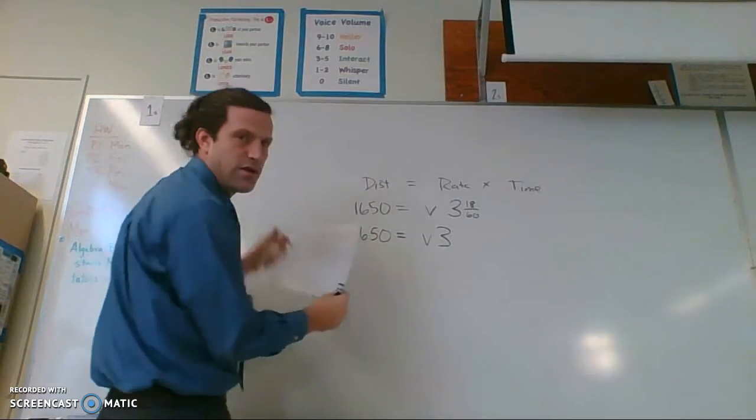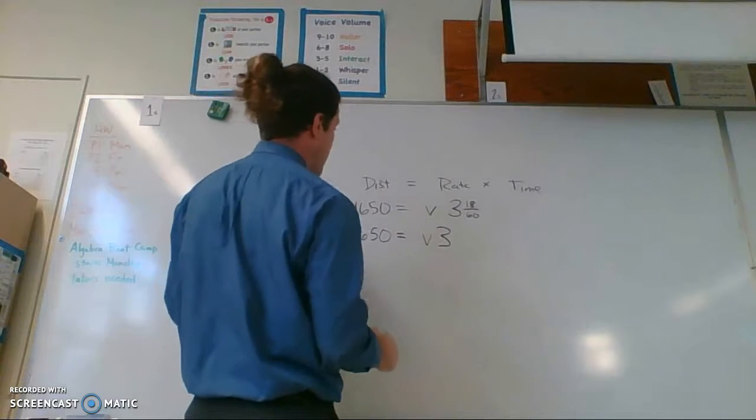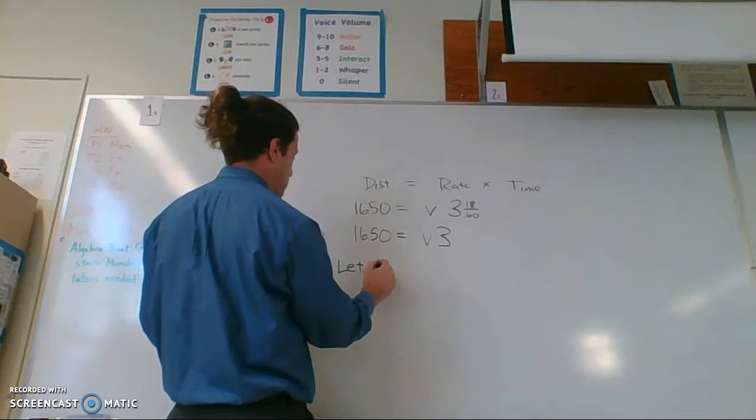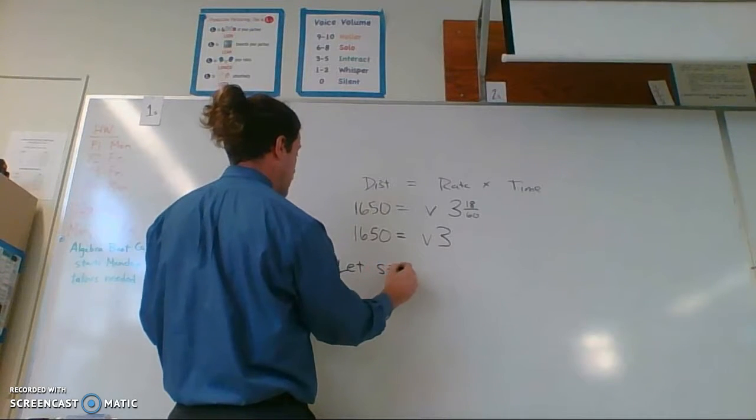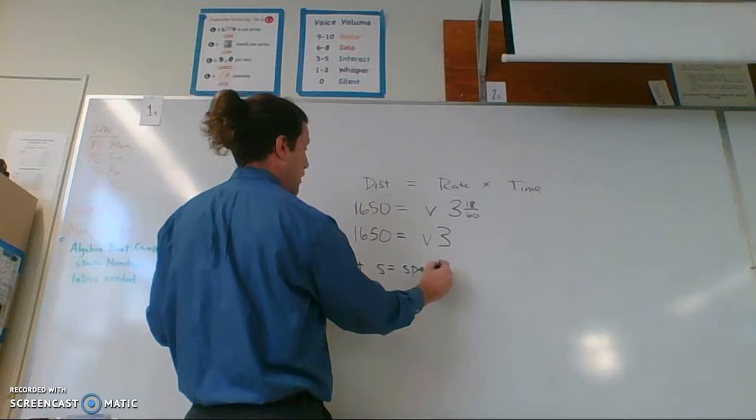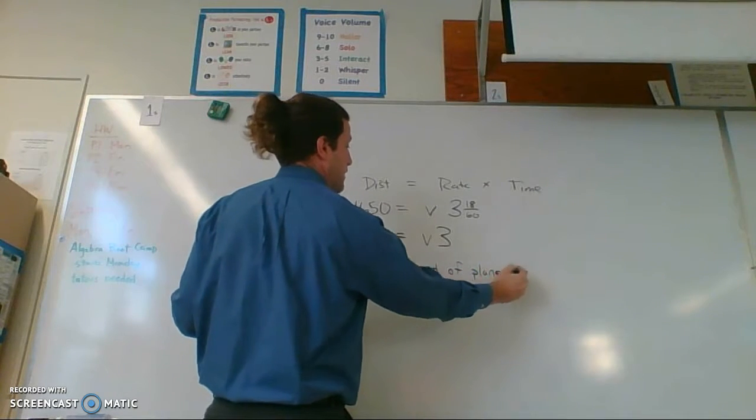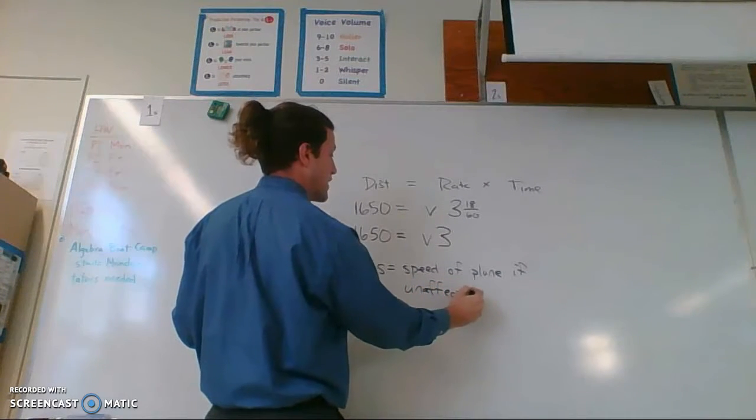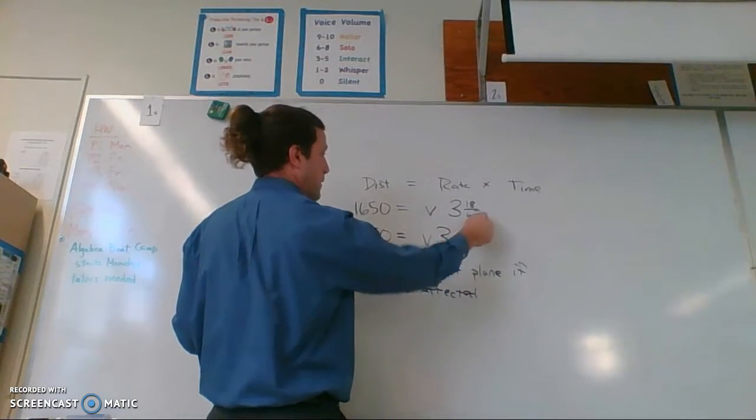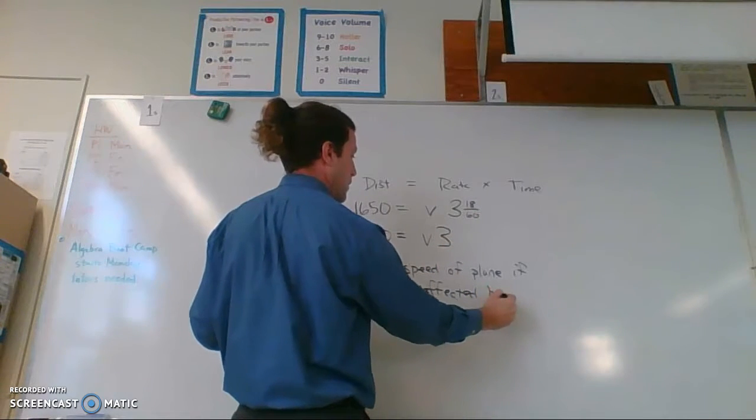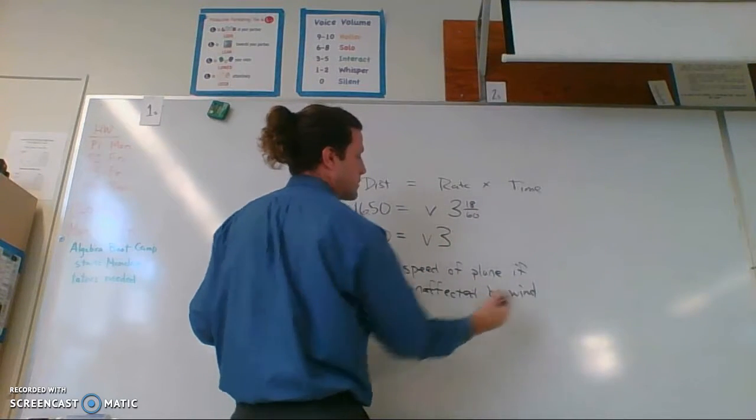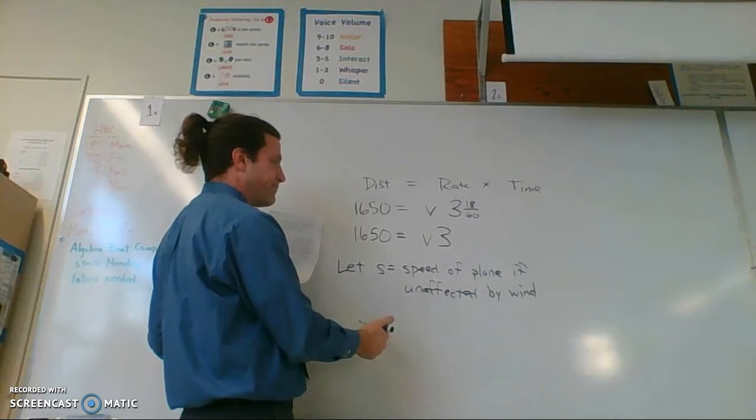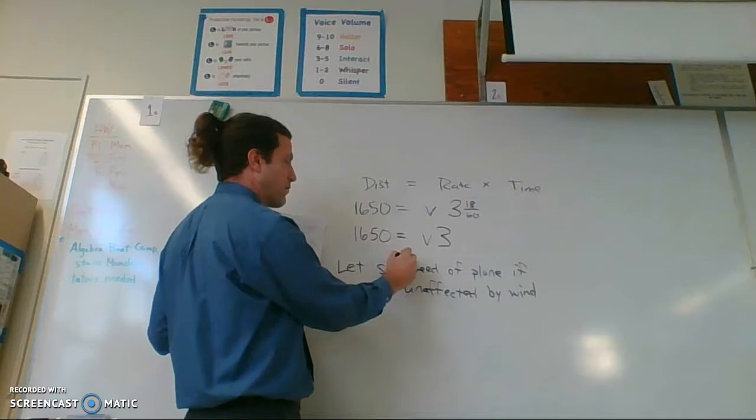This doesn't account for everything because it's telling us there's two variables. So instead of using V, I'll say let S equal speed of plane if unaffected by wind. So they're telling us that one of the reasons for the change in time is the wind. So the speed - let's just imagine like a theoretical speed of the plane.